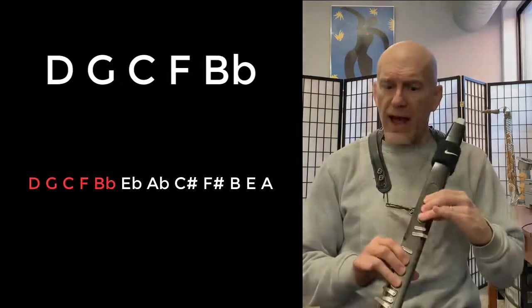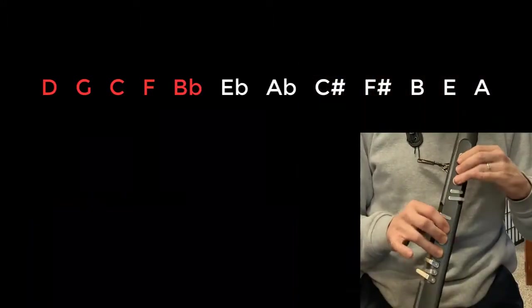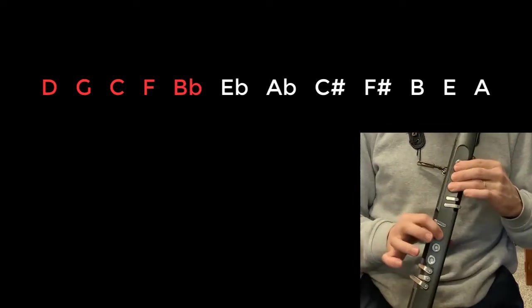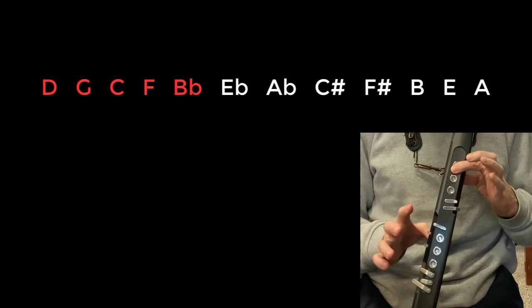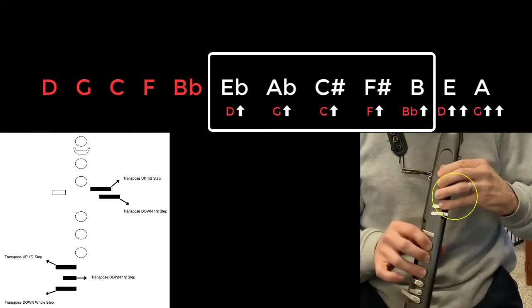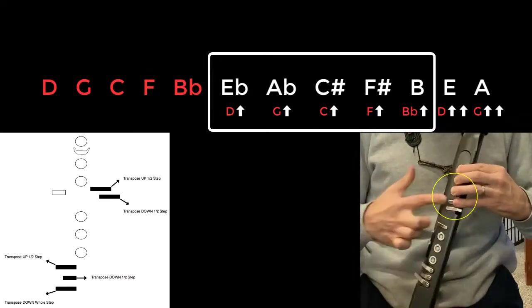So then if you transpose up, if you take the D after you play all those - the D scale, the G scale, the C scale, the F scale, the B-flat scale - if you go to D again and transpose up, that gives you an E-flat scale, and then you can just go around the fourths again with your pinky down.